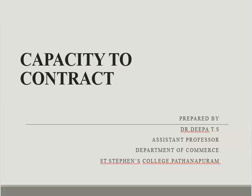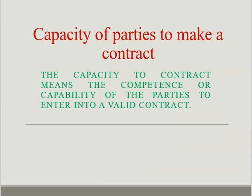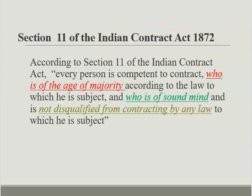The capacity to contract means the competence or capability of parties to enter into a valid contract. According to Section 11 of the Indian Contract Act 1872, every person is competent to contract who is of the age of majority according to the law to which he is subject, and who is of sound mind, and is not disqualified from contracting by any law to which he is subject.